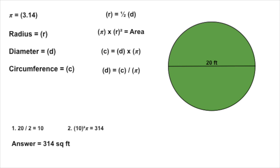How did you do? Did you get 314 square feet? That number should look familiar because it's 100 times pi. Why is that the case here? You should have divided the diameter of 20 by 2 in order to get the radius of 10. Then, remember pi r squared — the radius is 10, and 10 squared is 100, which we then multiply by 3.14 to get 314. Is that what you got?